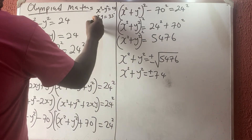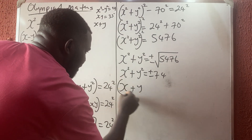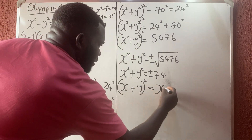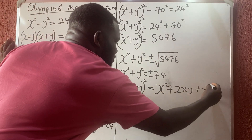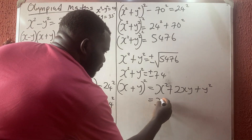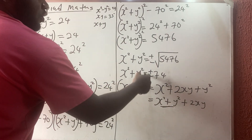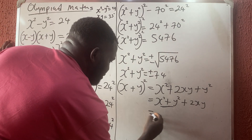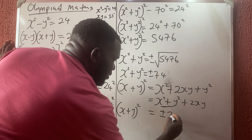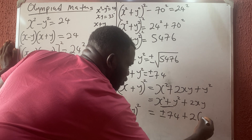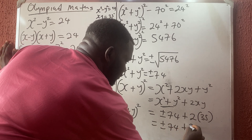Now I need to find x plus y. Squaring x plus y gives x squared plus 2xy plus y squared, which equals (x squared plus y squared) plus 2xy. Substituting: (x plus y) squared equals plus or minus 74 plus 2 times 35, which is plus or minus 74 plus 70.